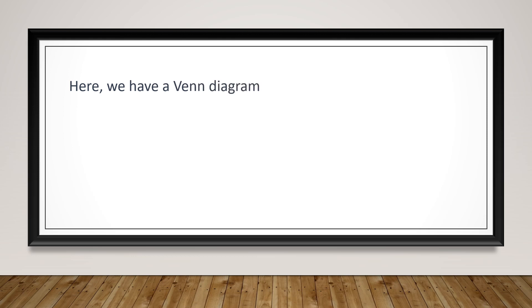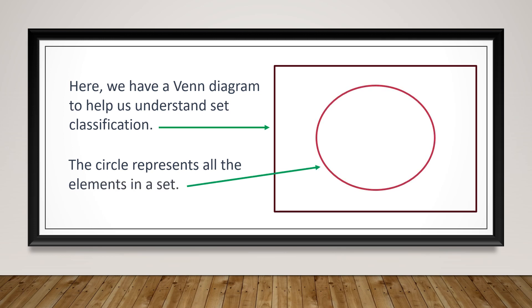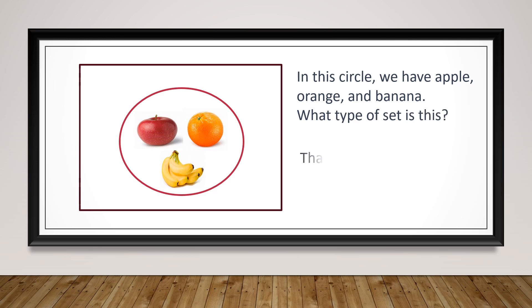Here we have a diagram to help us understand set classification. The circle represents all the elements in the set. In this circle we have apples, oranges, and bananas — just one apple, one orange, and one banana.